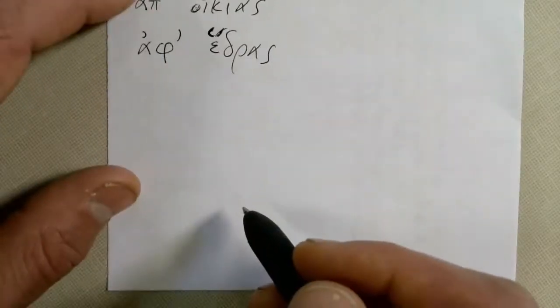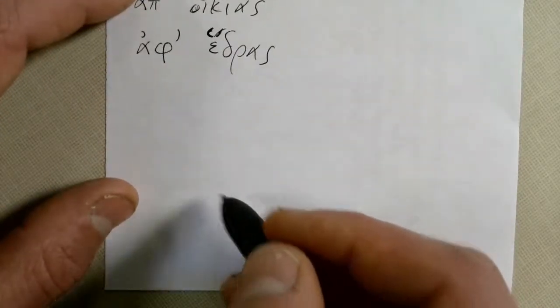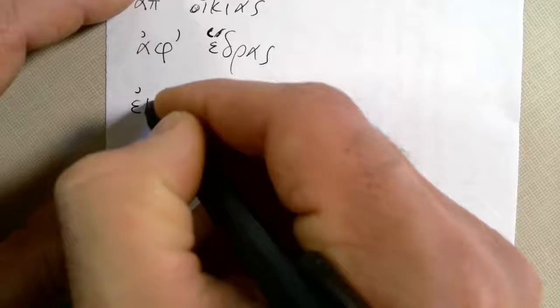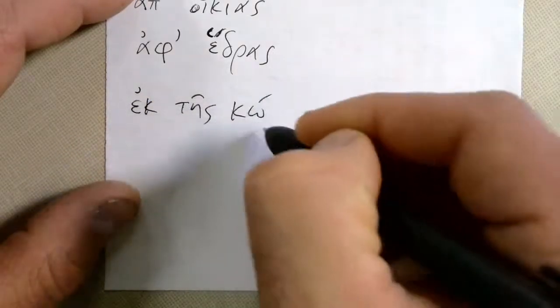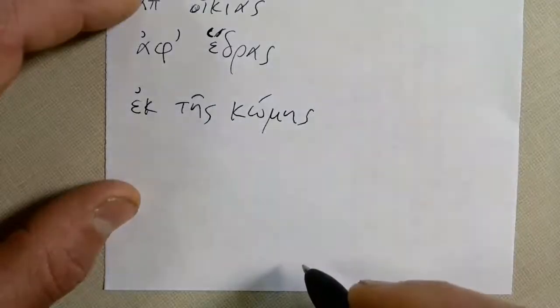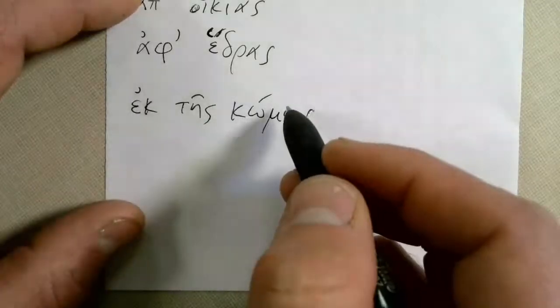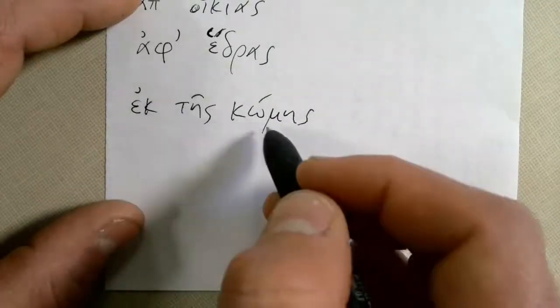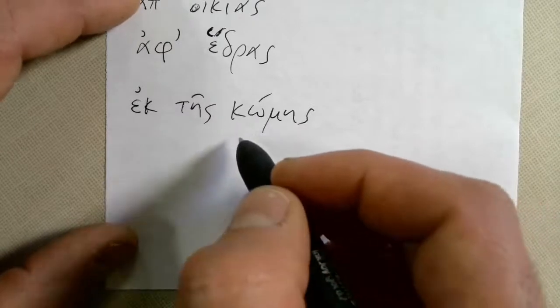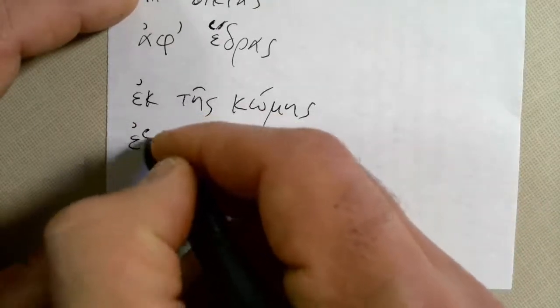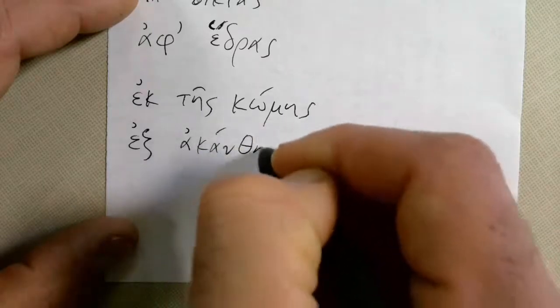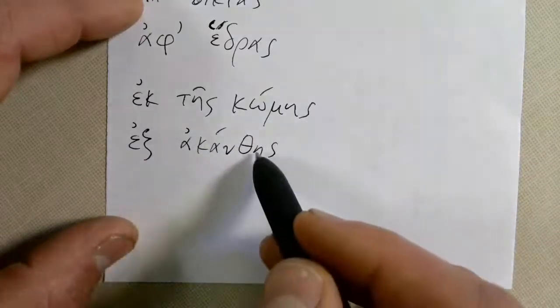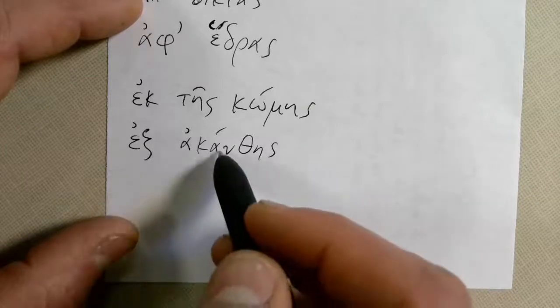Now here's some out ofs. Out of the village. Ectis comis. Out of the village. Notice it uses the genitive as well. And ex acanthis, out of a thorn. Ouch, out of a thorn.